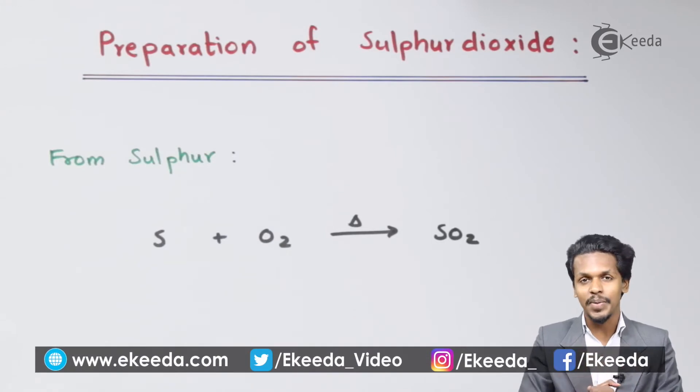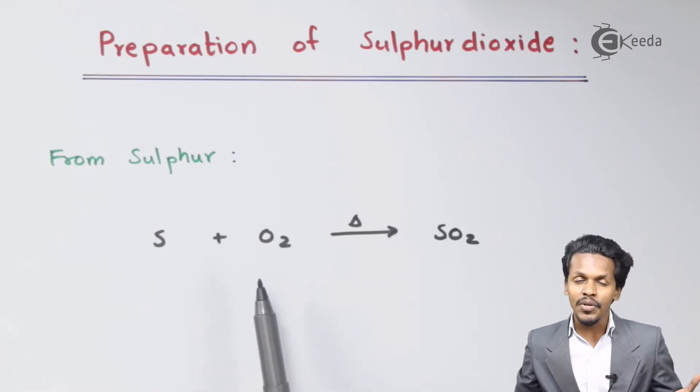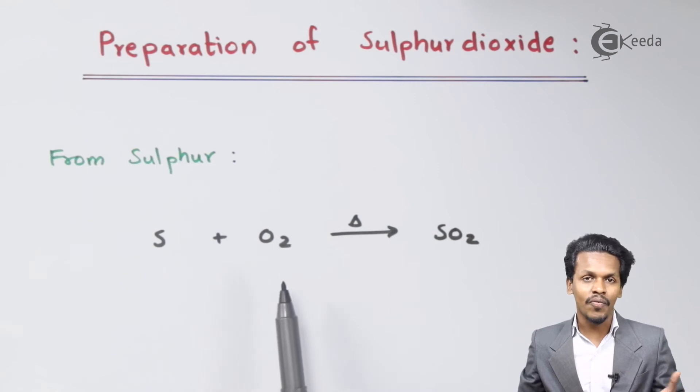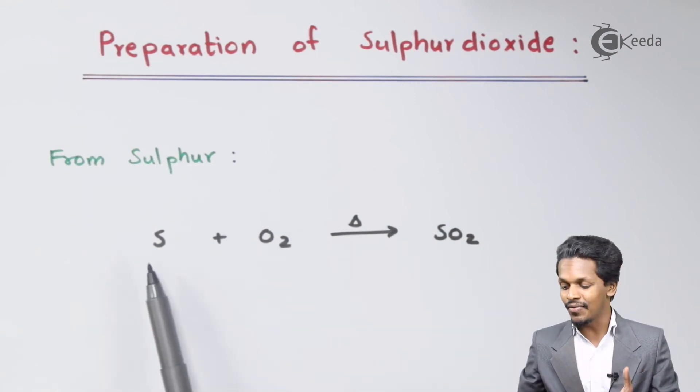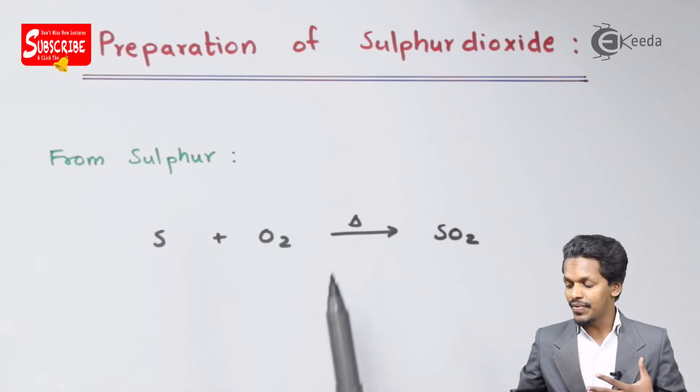Starting with the first method, we can easily prepare sulfur dioxide from sulfur. If sulfur undergoes a combustion reaction in the presence of oxygen at high temperature, we can convert sulfur into sulfur dioxide. For this, we need to provide heat.